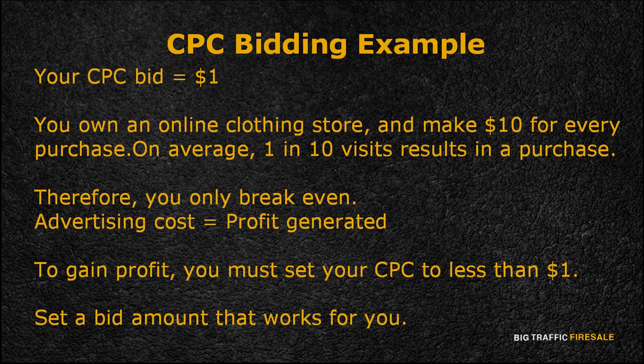For example, let's say you've set your CPC bid to $1. You own an online clothing line shop, and you make $10 from every purchase, and on average, 1 in 10 visits results in a purchase. As a result, you only break even as your advertising cost is equal to the profit you generate. Therefore, to gain profit, your CPC should cost you less than $1.